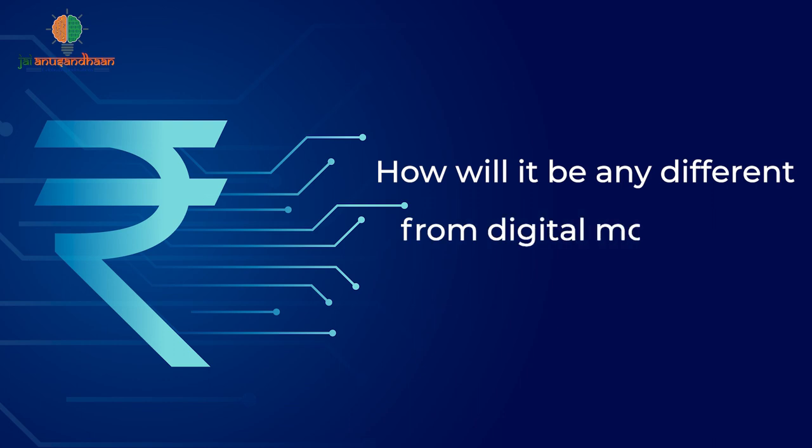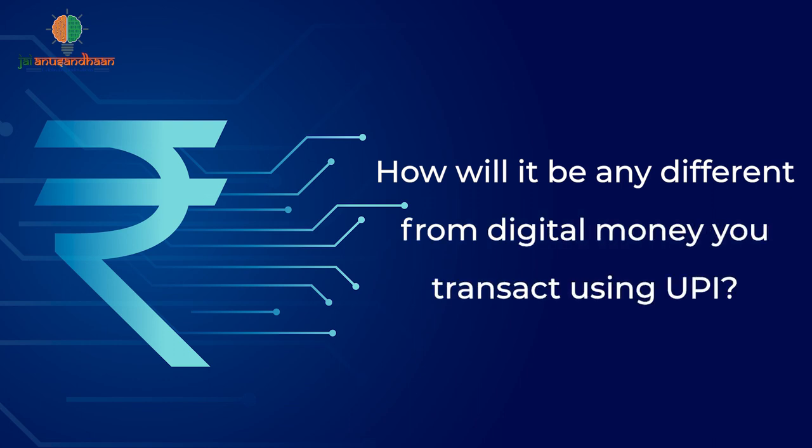How will it be any different from digital money you transact using UPI? To transfer money through UPI, you have to make a request and forward it to your bank. Your bank deducts the amount from your account balance and transfers it to your wallet and subsequently to the beneficiary account. Not only this, the bank also triggers an elaborate clearing and settlement process to ensure a fair and proper transaction. So there is a chain of intermediaries who enable this transaction.